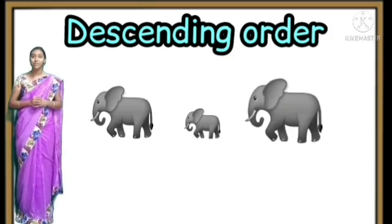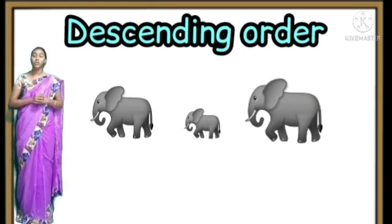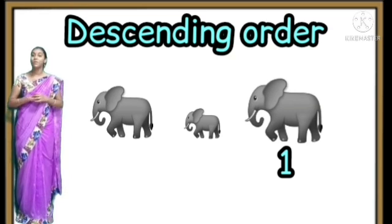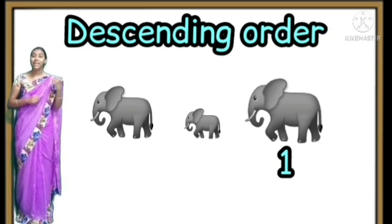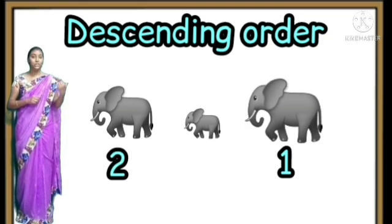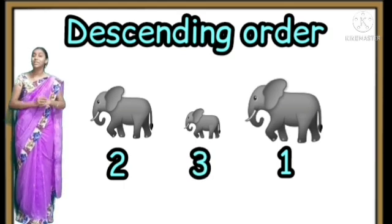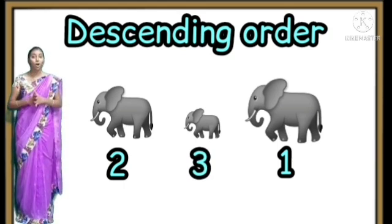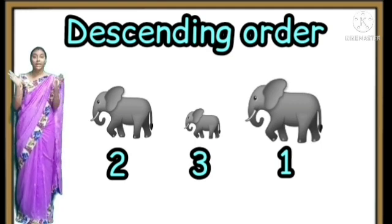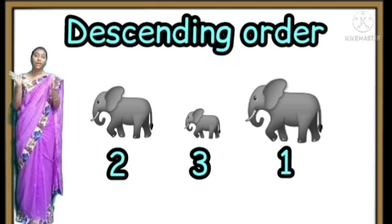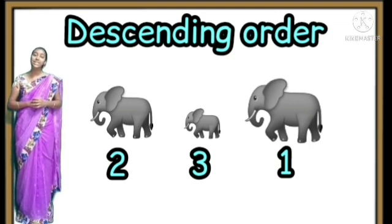Now look at the next picture — we have seen these elephants. The same way, arrange them: the biggest elephant comes first. Of the remaining two, which is the biggest? The one in the first row — that comes in the middle. And the smallest elephant comes at last. Arranging things from the biggest one to the smallest one is descending order.